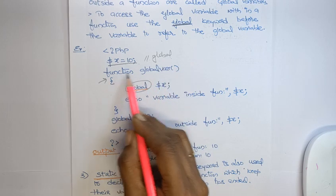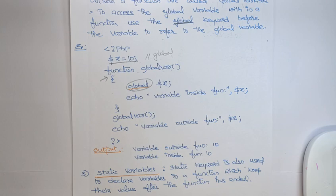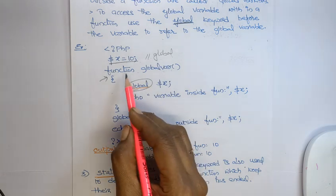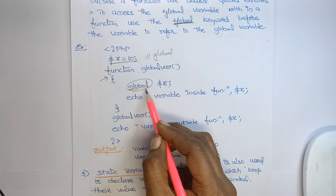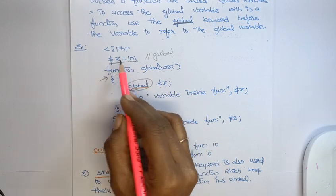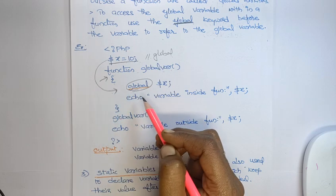Next one, function, function name. Function name I am mentioning as global variable. Any name you can mention. So here, open the flower brace. Next, this global variable value, this global variable I want to use within this function.